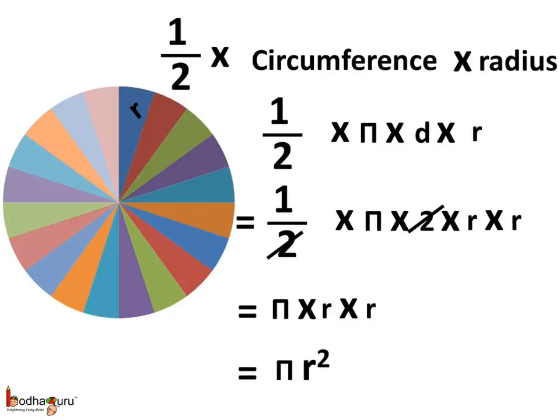Thus, we get the area which is equal to π multiplied by R multiplied by R, which is equal to πR². And this is the area of rectangle.